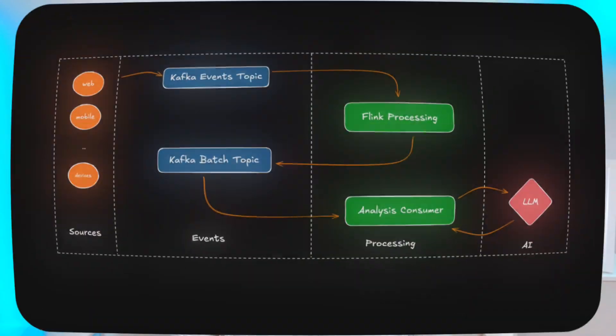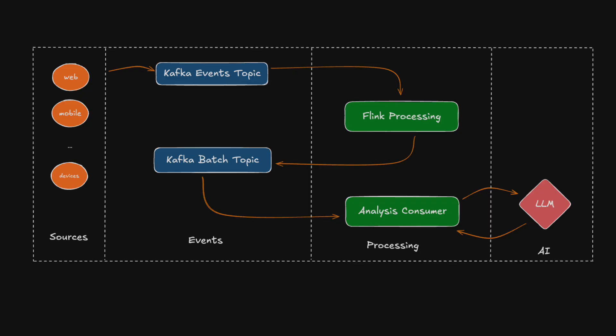We're going to connect three things. First, we will generate realistic user events routed to Kafka, like 'view product details' and 'add to cart.' Second, we will use Apache Flink to batch these events by ad, so we compress a lot of noise into a single meaningful request. And third, we will send those batches to a Kafka topic that a lightweight worker reads, calls an LLM for insights, and prints out a compact JSON summary that you can ship to a dashboard, store, or fire off as a dynamic action.